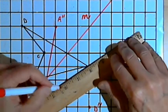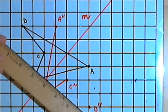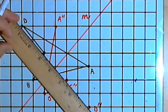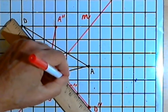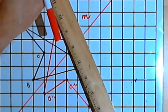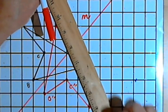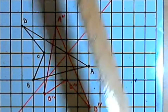It's always a good idea, especially if you have a complicated image, to label your points. Because otherwise it's fairly easy to get confused and connect the wrong points. And there's D double prime to A double prime.